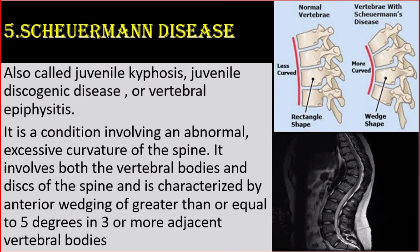Number 5: Scheuermann disease. It is also called juvenile kyphosis, juvenile discogenic disease, or vertebral epiphysitis. It is a condition involving an abnormal excessive curvature of the spine. It involves both the vertebral bodies and discs, and is characterized by anterior wedging of greater than or equal to 5 degrees in three or more adjacent vertebral bodies.